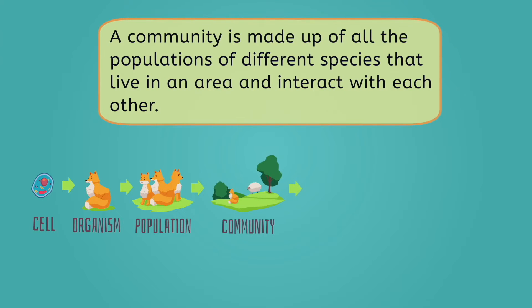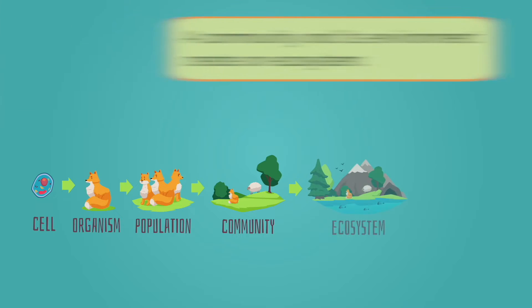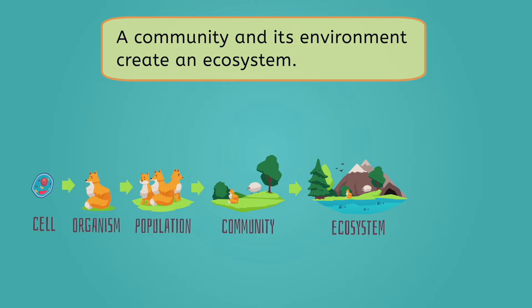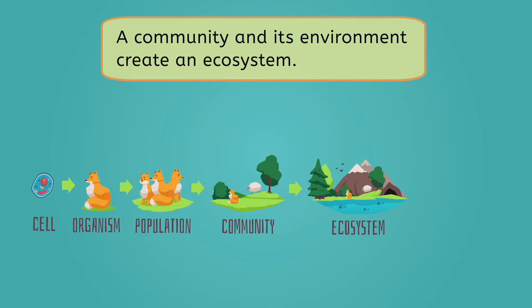These come together to create a community, which is made up of all the populations of different species that live in an area and interact with each other. Depending on the area, this could include a variety of plants, bacteria, protists, fungi, and animals. Then when you take this community of living things and add abiotic factors like the land, air, and water, you get an ecosystem.